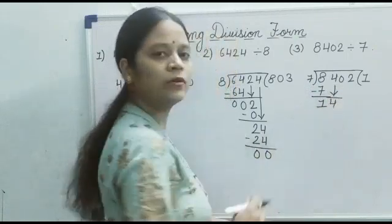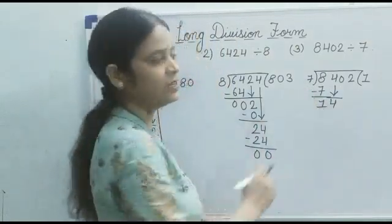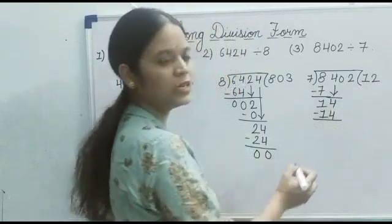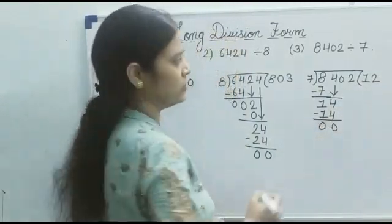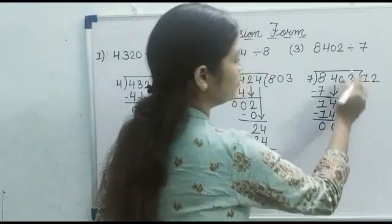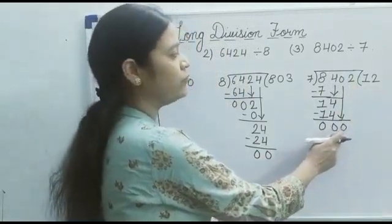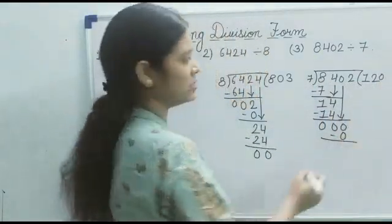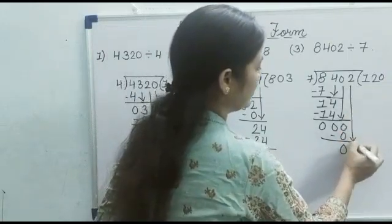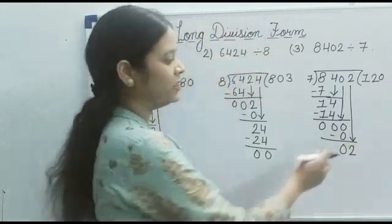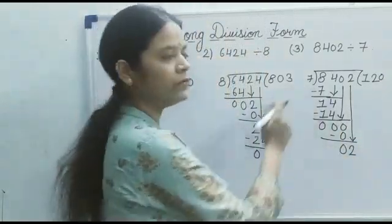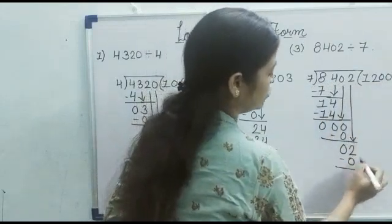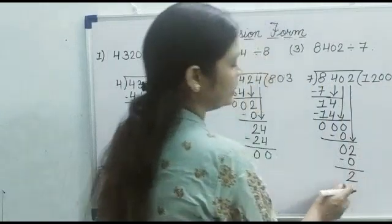Then we bring down the next digit, giving us 14. And 14 comes in the table of 7 at 2 times — 7 twos are 14. So we write 14. Then 4 minus 4 is 0, and 1 minus 1 is 0. Next we bring down the next digit, which is 0, and 7 zeros are 0. Then 0 minus 0 is 0. Next we bring down the digit 2, and 2 does not come in the table of 7. So we write just smaller than 2, that is 0 — 7 zeros are 0. Then 2 minus 0 is 2, so 2 is the remainder.